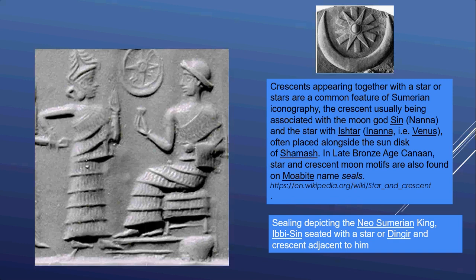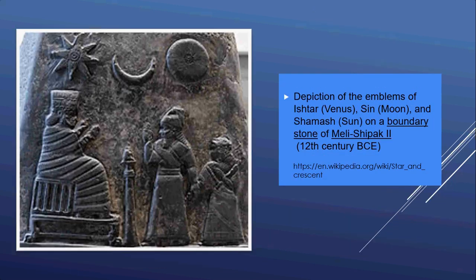Here is a picture of a ceiling depicting the Sumerian king, with Sin seated with the star of Dingir and the crescent adjacent to him. Here's another picture of the emblems of Ishtar or Venus, Sin the moon, and Shamash the sun.